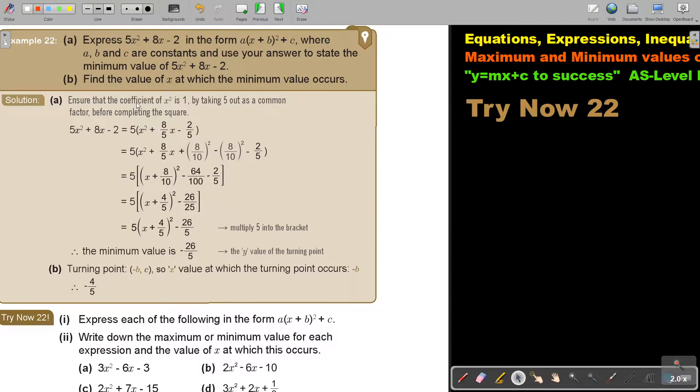Ensure that the coefficient of x squared must be 1. So now it's not an equation, so you cannot just divide by 5 all the way through. You will take 5 out as a common factor before you complete the square. So I will just take 5 out, and if you take 5 out, divide each term by 5.